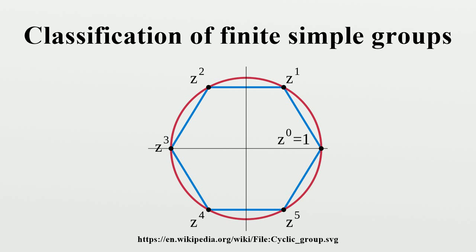Groups of characteristic 2 type: A group is of characteristic 2 type if the generalized fitting subgroup F* of every 2-local subgroup is a 2-group. As the name suggests, these are roughly the groups of Lie type over fields of characteristic 2, plus a handful of others that are alternating or sporadic or of odd characteristic. The classification is divided into small and large rank cases, where the rank is the largest rank of an odd abelian subgroup normalizing a non-trivial 2-subgroup. The rank 1 groups are the thin groups, classified by Aschbacher, and the rank 2 ones are the notorious quasithin groups, classified by Aschbacher and Smith. These correspond roughly to groups of Lie type of ranks 1 or 2 over fields of characteristic 2.